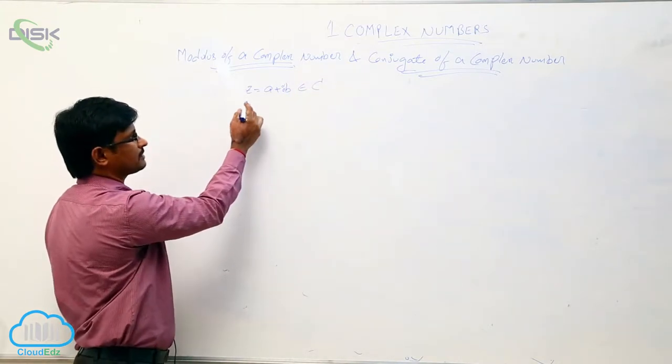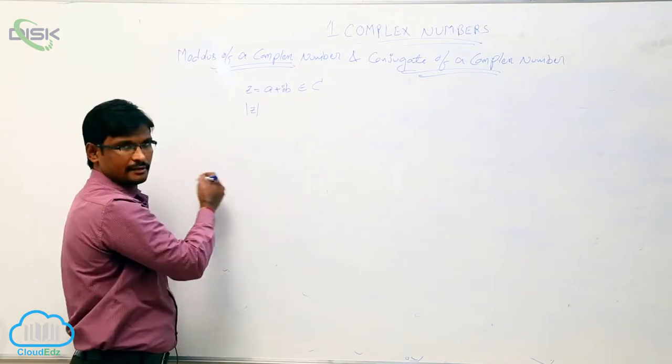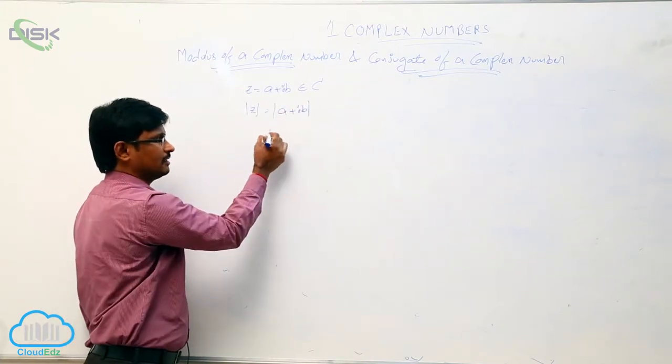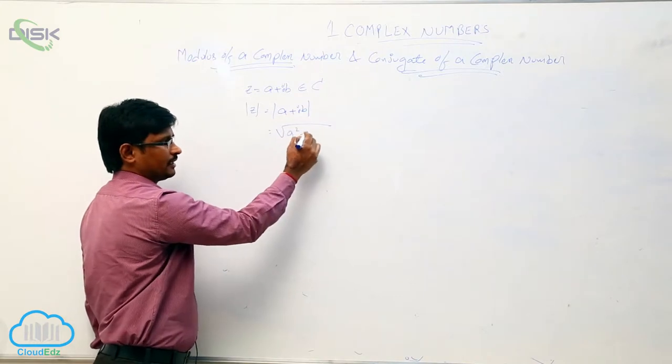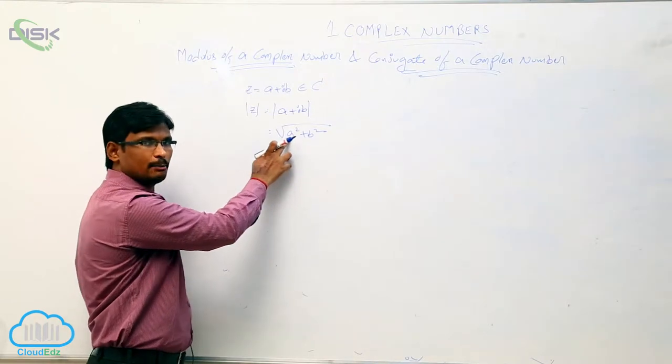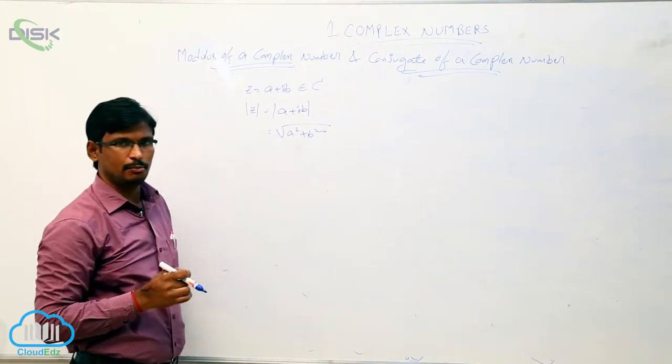The mod of complex number is denoted by mod z and it is defined as square root of a square plus b square. That is square root of real part square plus imaginary part square.